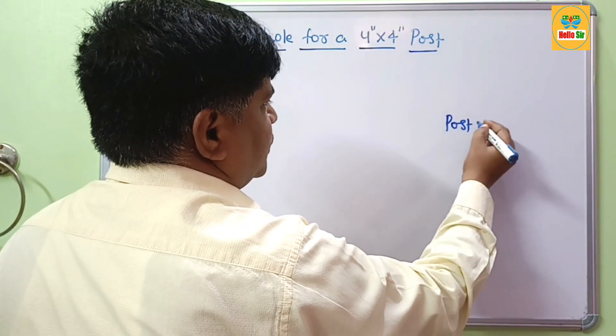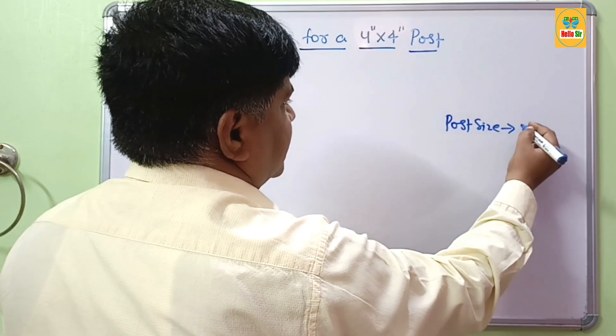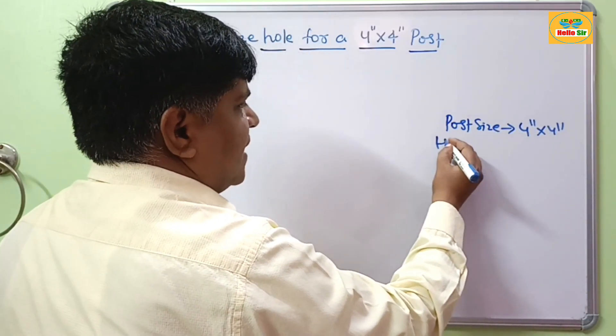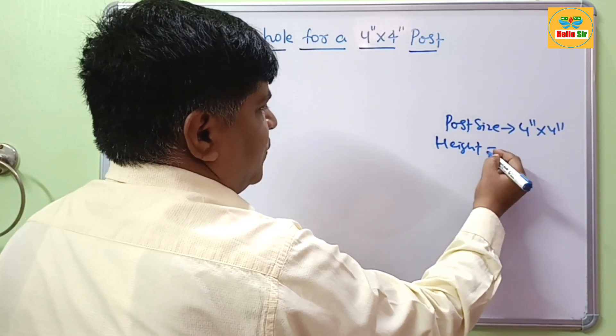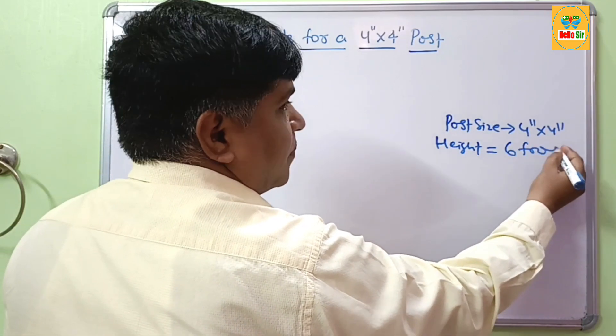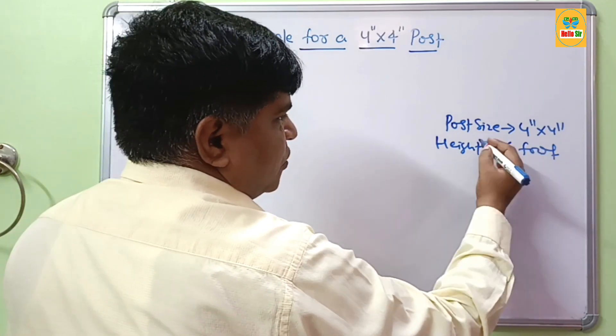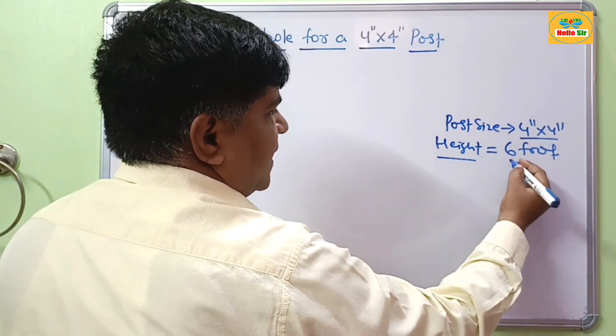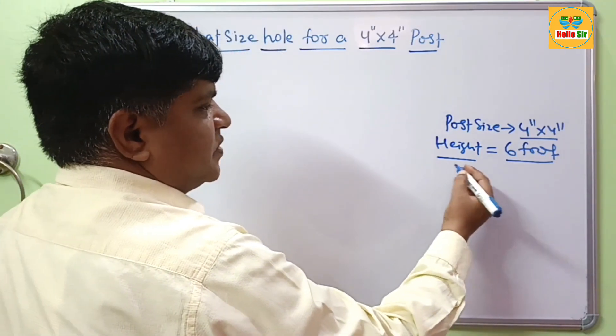Here you have the post size is 4 inches by 4 inches. And the height of your post will be about 6 foot above the ground. It means the size of post is 4 inches by 4 inches and their height above the ground is 6 foot.